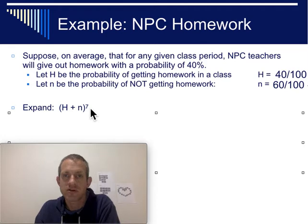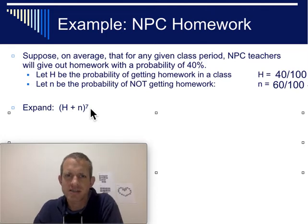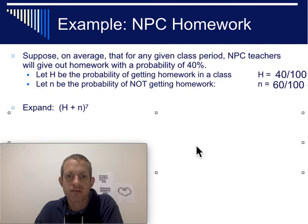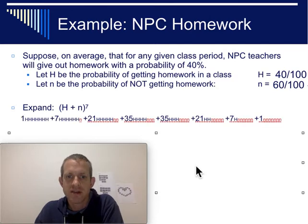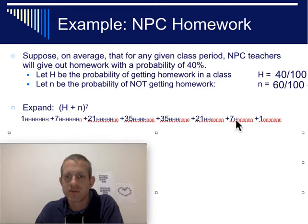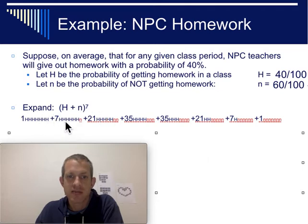At this school, students typically take seven classes, so we raise it to the seventh power. Pull out Pascal's triangle and find the seventh row: 1, 7, 21, 35, 35, 21, 7, and 1. Then we have H to the seventh, H to the sixth times N, and so forth all the way down the line.